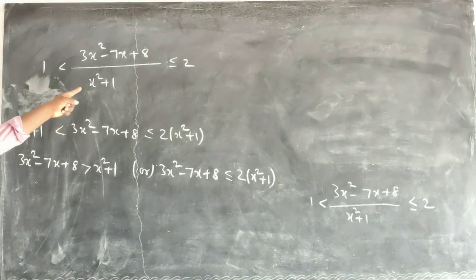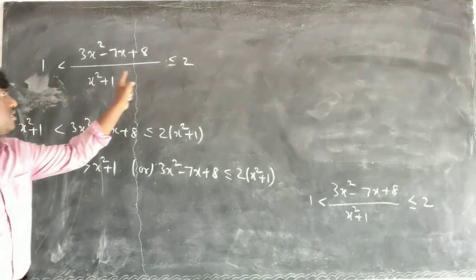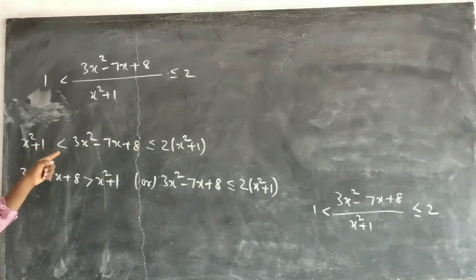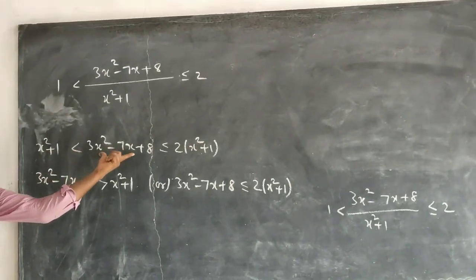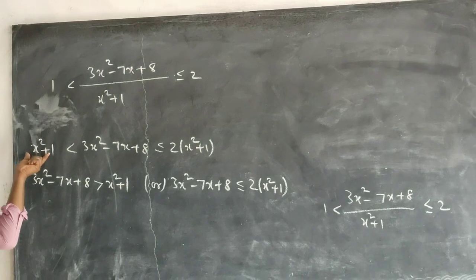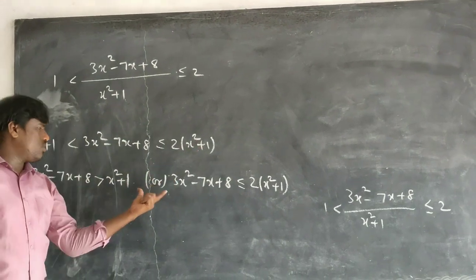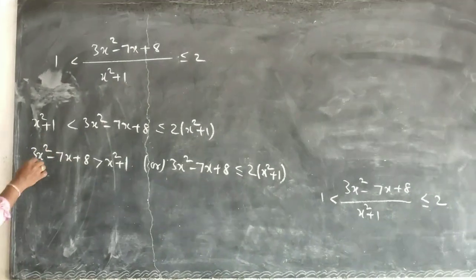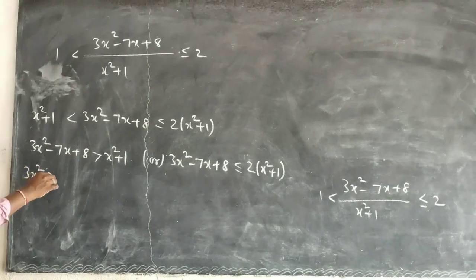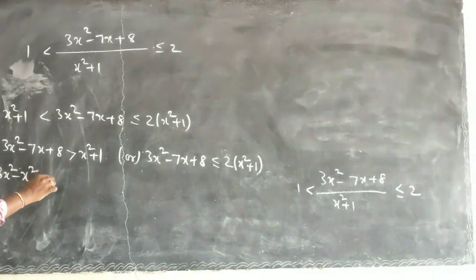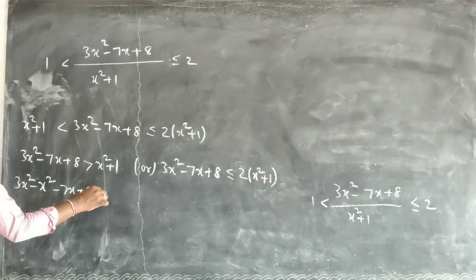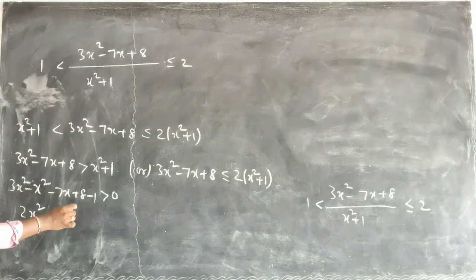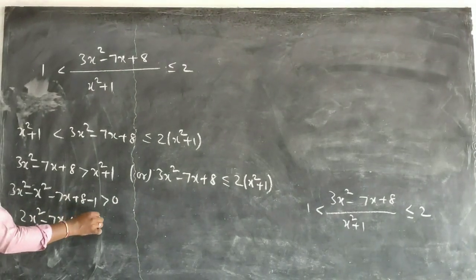I multiplied by x squared plus 1. So I have two parts: this is greater than this, and this is less than this. Now for the first part, sending terms to one side: 3x squared minus x squared minus 7x plus 8 minus 1 greater than 0, which means 2x squared minus 7x plus 7 greater than 0.